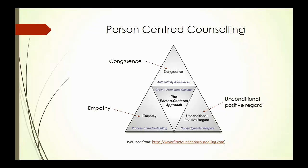You need congruence — that means being authentic yourself, not just play-acting or pretending, but genuinely concerned and wanting their best interests. You might be trying to help a person you've never met before, never talked to before, so give yourself time to build up that relationship and rapport.